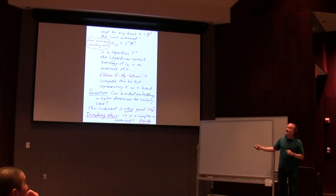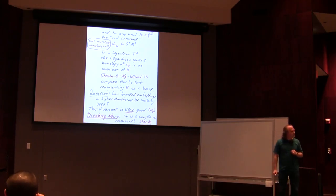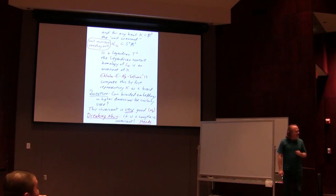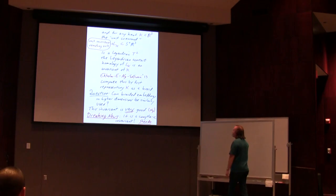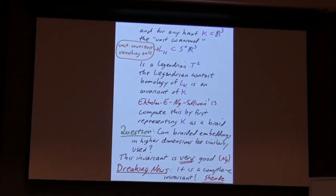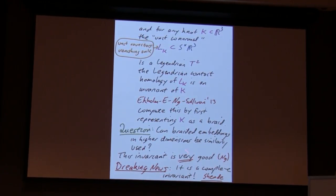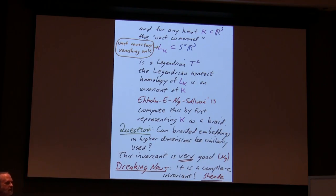The details were written down by Tobias Ekholm, Mike Sullivan, Lenny Ng, and myself. Lenny Ng has explored this extensively and shown it's an amazing invariant that distinguishes tons of things. It was conjectured for a long time to be a complete invariant, and actually breaking news from last week: Vivek Shende put out a paper saying that this knot contact homology is a complete invariant. What's really cool is it says the contact geometry in the unit cotangent bundle completely recaptures the underlying smooth topology of the embeddings. The way this was computed in dimension three was to take your knot, braid it, and use the braiding to actually compute these invariants. A very interesting question is: can you use braided embeddings in higher dimensions to explicitly compute knot contact homology in the higher-dimensional setting?